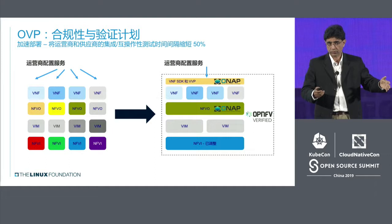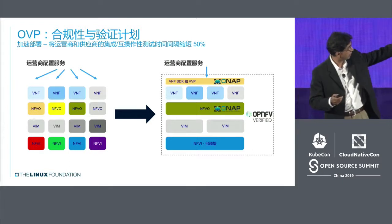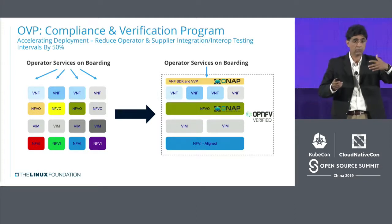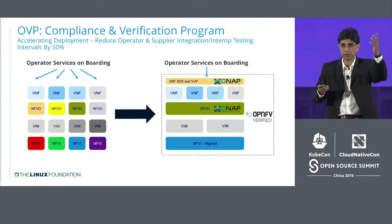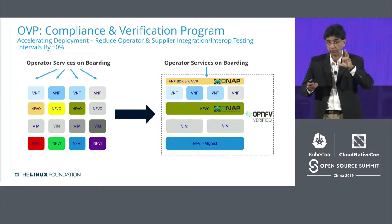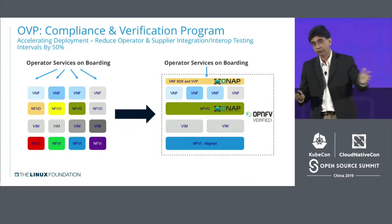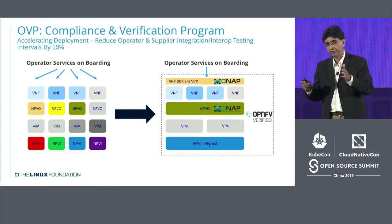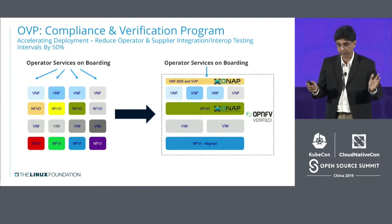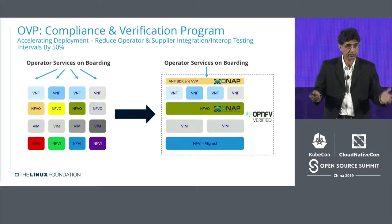In the world of telcos — whether you're China Mobile, China Telecom, China Unicom, or anyone in the world — you get a VNF or virtual network function from one vendor, an orchestrator from another vendor, a virtual infrastructure manager from another vendor, and the hardware and NFVI from yet another. Then you have to onboard and test. LF Networking's OVP program, just launched, will simplify the whole lifecycle by 50%, based on ONAP and OPNFV, and we are working with GSMA to help standardize NFVI.